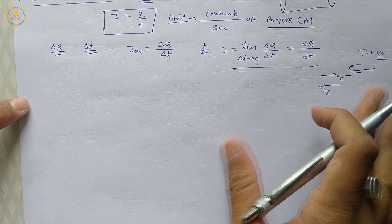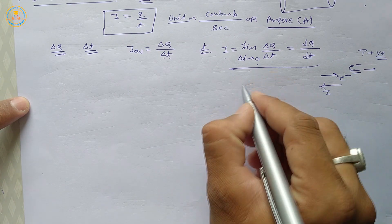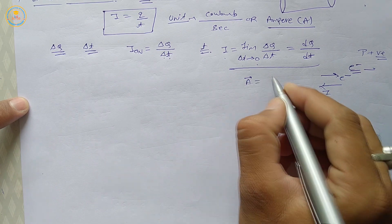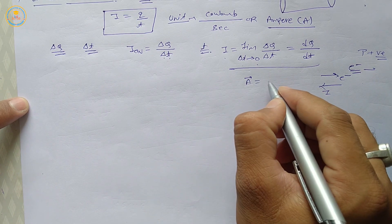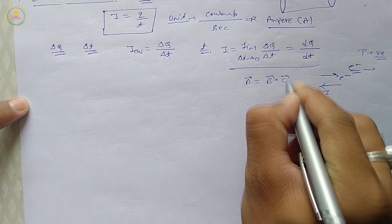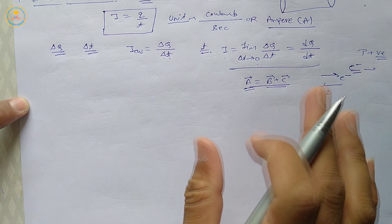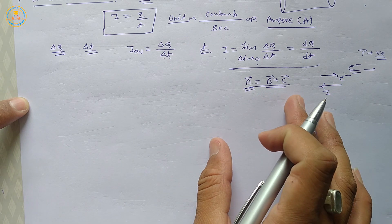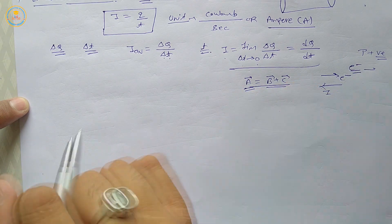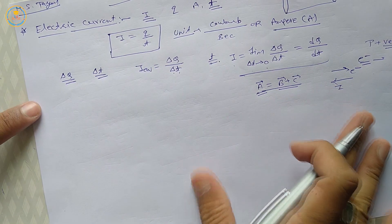Although current has a direction which is opposite to the flow of electrons, it is still a scalar quantity because electric current does not obey the law of vector addition. The resultant vector equals the vector sum of the other vector quantities, but electric current does not follow this law, so it is a scalar quantity.